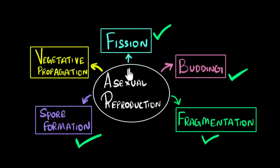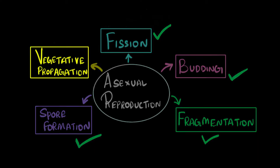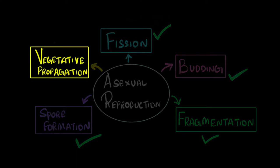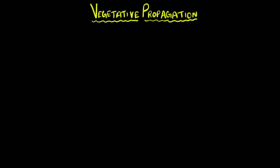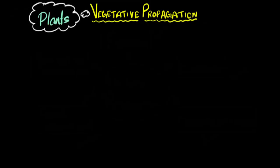In the previous couple of videos, we have covered four kinds of asexual reproduction. In this video, we will focus on vegetative propagation. It's a kind of asexual reproduction that happens in plants — whenever asexual reproduction happens in plants, we call it vegetative propagation.